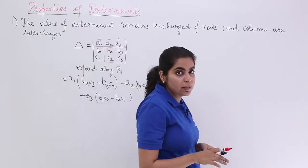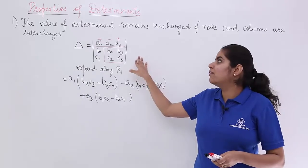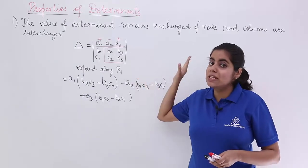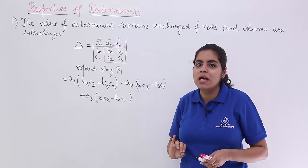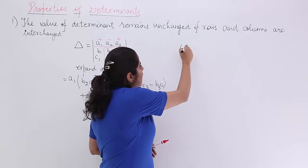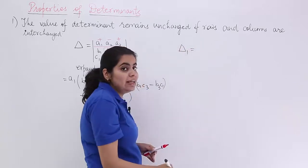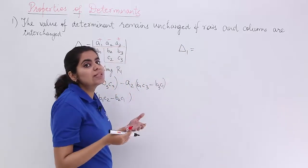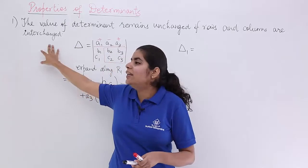Δ is a determinant given to me with a1, a2, a3, b1, b2, b3, c1, c2, c3 as the rows. Now, if the story changes a bit. Now, if I don't have Δ, rather I have Δ₁. And Δ₁ is such that the rows and columns are interchanged.